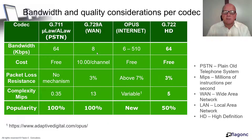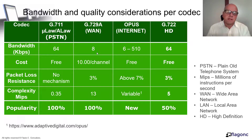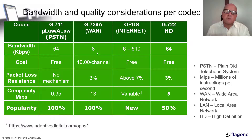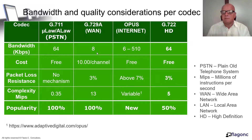The second codec is G729A, the main protocol for wide area networks. Wide area networks sometimes have packet loss, so G729 offers 3% packet loss resistance. Another important aspect is bandwidth reduction — it reduces bandwidth 8 times, from 64 kilobits per second down to 8 kilobits per second. It used to cost $10 per channel, but the patent has now expired, so many providers offer G729 for free. The complexity is 13 MIPS (13 million instructions per second), and it's very popular — almost all IP phones support G729.